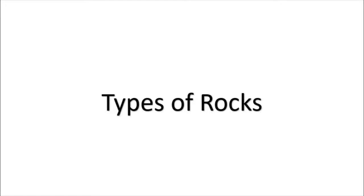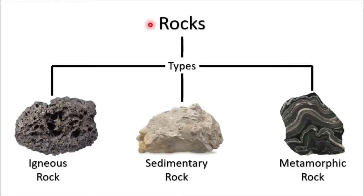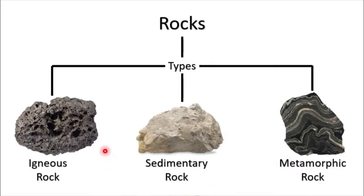Types of rocks. Rocks are divided into three classifications or three types. The first type is an igneous rock, the second type is a sedimentary rock, while the third type is a metamorphic rock. In the next slide, we will understand how igneous rock, sedimentary rock, and metamorphic rocks are formed on this planet.